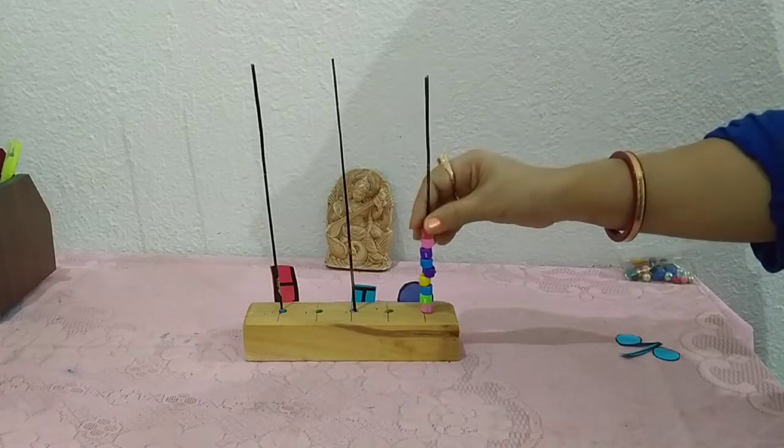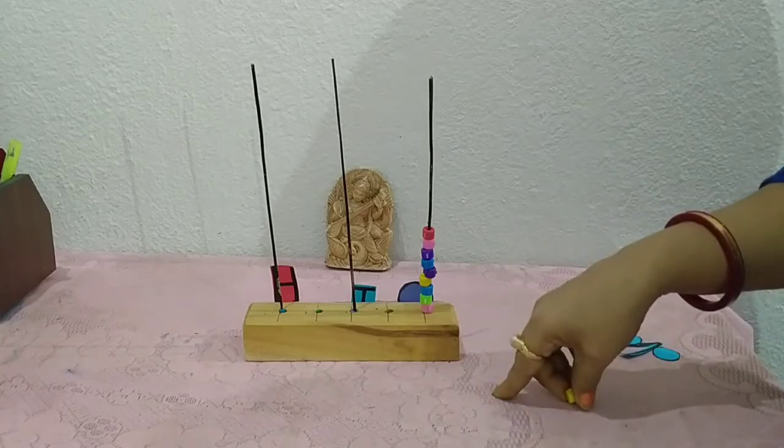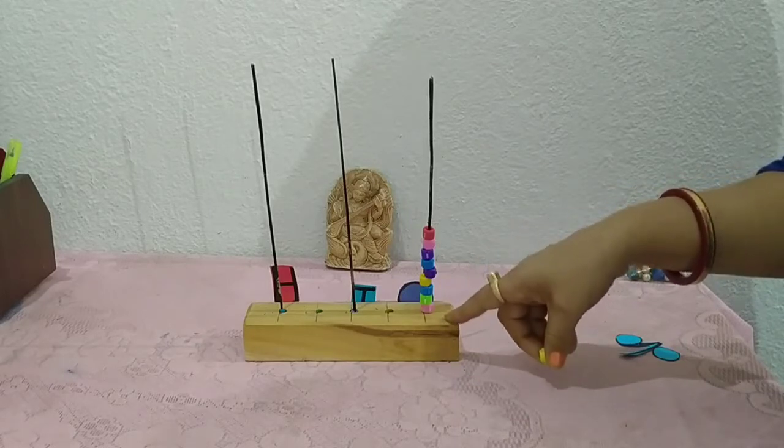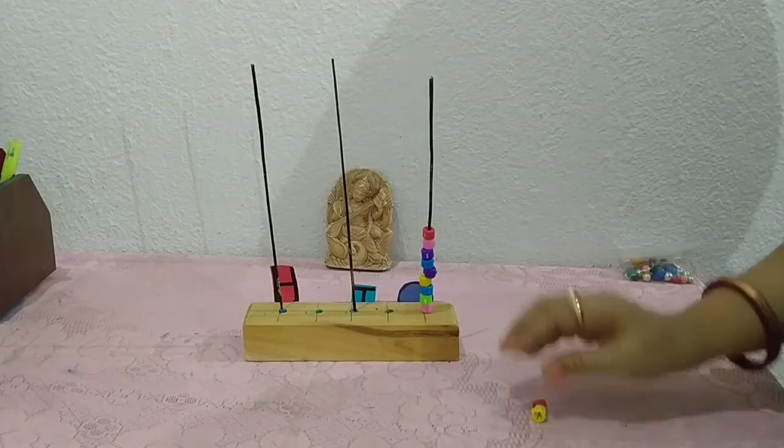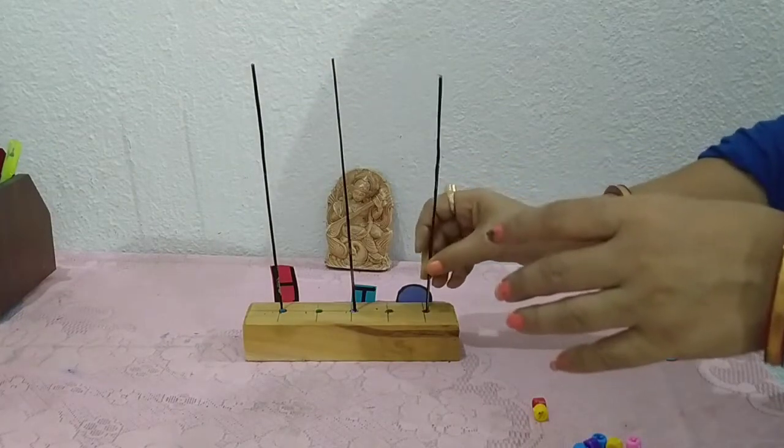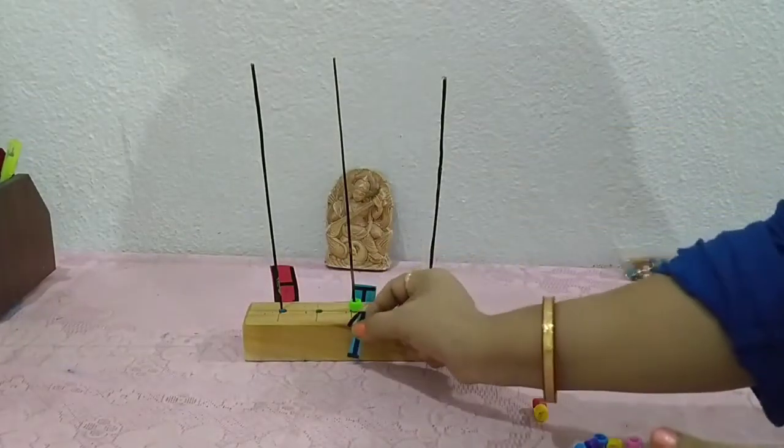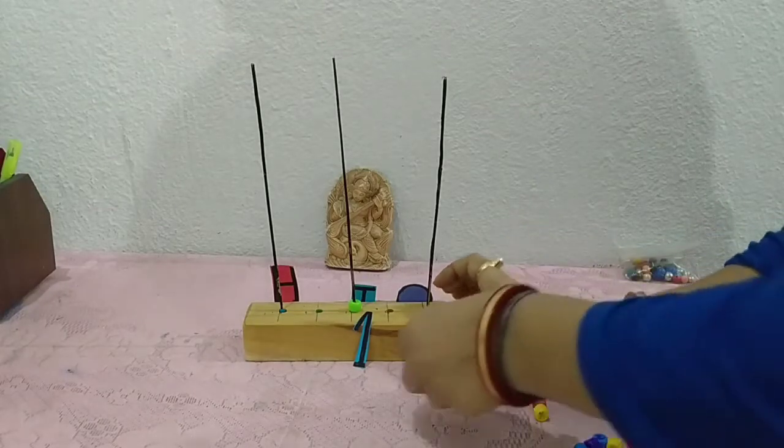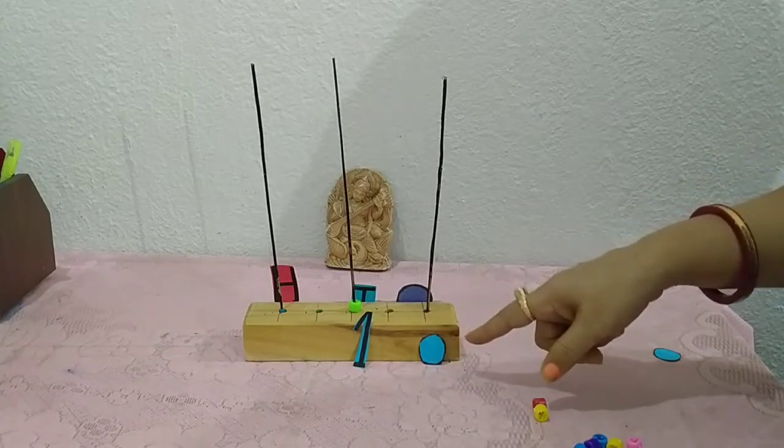9. After 9 what comes? Yes, 10. But you know very well, we can write in one place only one digit number. So 10 is a two digit number. So what will I do? I will remove all these beads. And here I am putting only one bead. So 1. And here nothing is there means 0. So 1, 0 - 10. Okay?